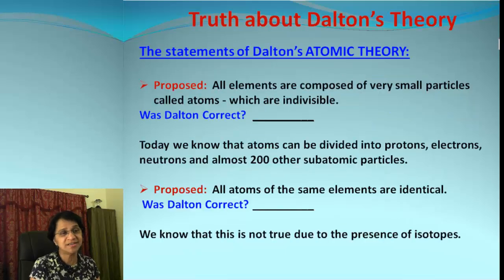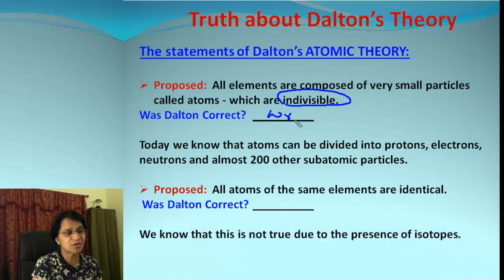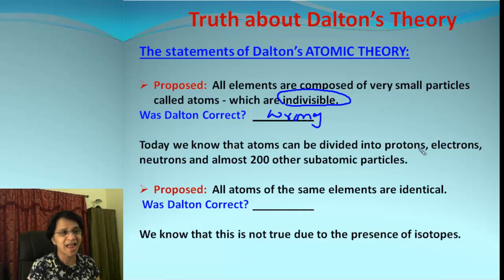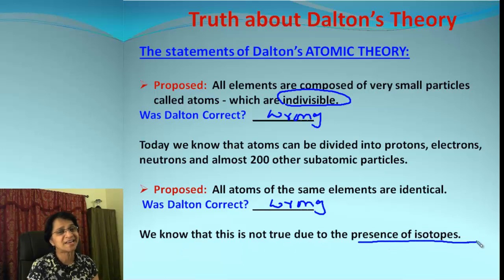Now let's evaluate the truth in Dalton's theory. The first statement: Dalton proposed that all elements are composed of small particles called atoms, and they are indivisible. Was Dalton correct? No — he was wrong, because we know an atom can now be divided into protons, electrons, and neutrons. Dalton also proposed that atoms of the same element are identical — was he correct? No, he was wrong because of isotopes.